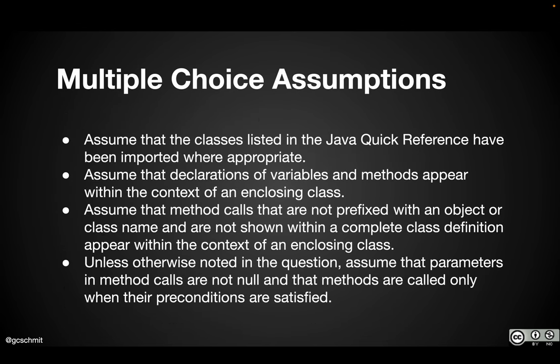All right here are some assumptions you should make as you take the multiple choice portion. You should assume that the classes listed in the Java quick reference have already been imported when appropriate. They're not trying to trick you with a question where it's like haha we didn't import the class and so this code doesn't work. You should assume that the declaration of the variables and the methods appear within the context of an enclosing class. They're not going to show you an entire class or an entire file. They're just going to focus on the relevant portions. Again they're not trying to trick you.